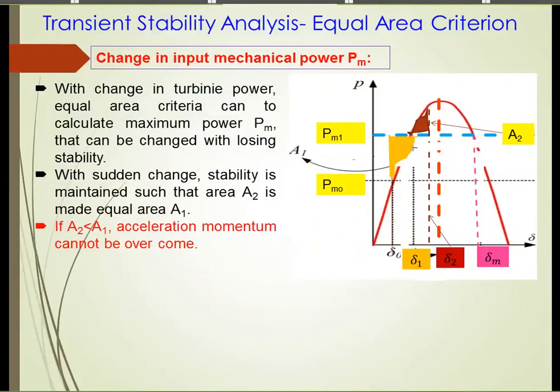We start with the next part of the lecture on Transient Stability Analysis using the method we call Equal Area Criteria. What we discussed last time was the case of Equal Area Criteria being applied for a sudden change in the turbine power.